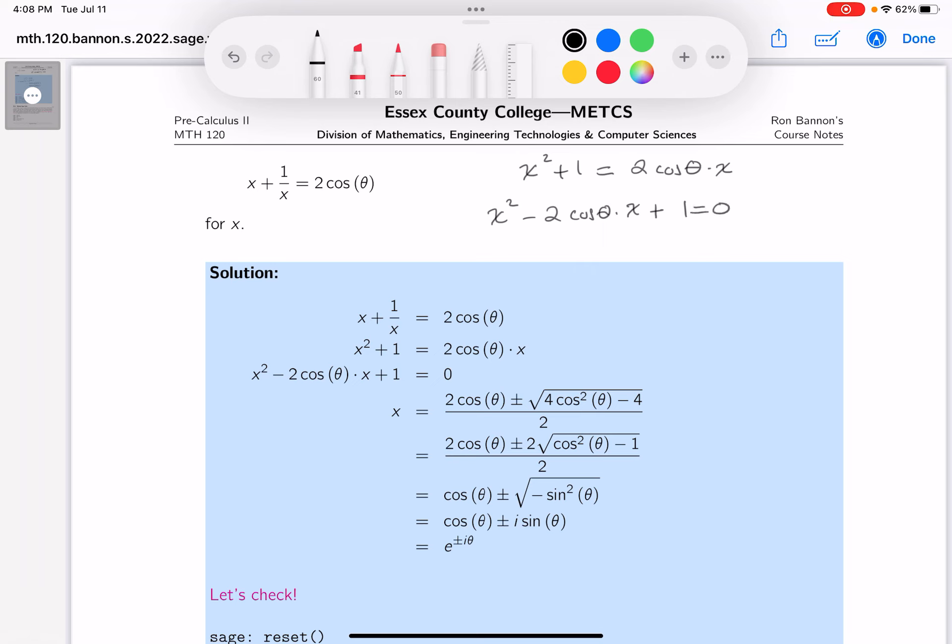This is quadratic in form. I have to write down the a, b, and the c now. So the a is 1. The b is actually minus 2 cosine of theta. It's a coefficient of linear term. And what's the c over here? Whoops, sorry about that. The c is going to be equal to the number 1.